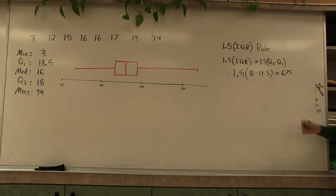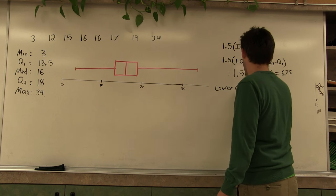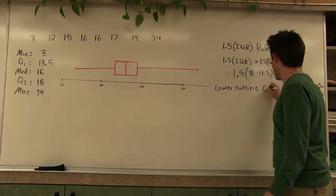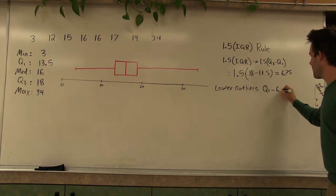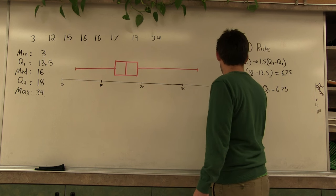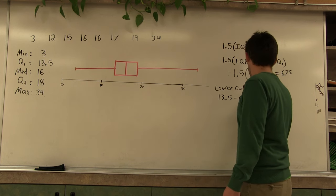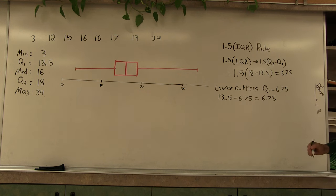Now what we do with this value is we subtract it from quartile 1 to look for lower outliers. Quartile 1 is 13.5. 13.5 minus 6.75 is 6.75. So if we have any values less than 6.75, it's going to be considered a low outlier.